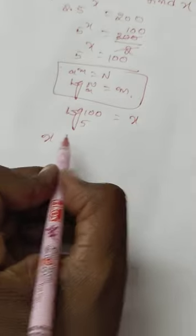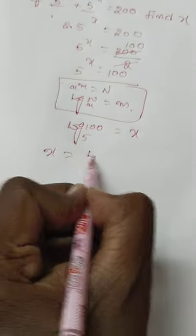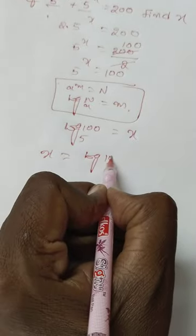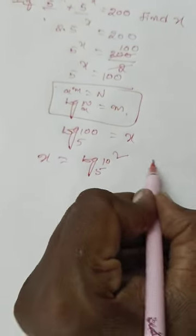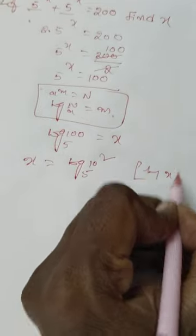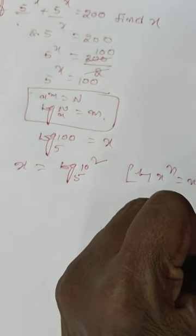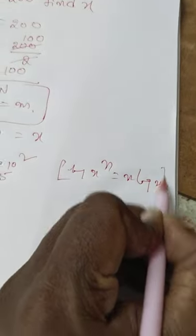x is equal to log 100. You write 10 square to base 5. Here log x to the power of n is equal to n log x formula.